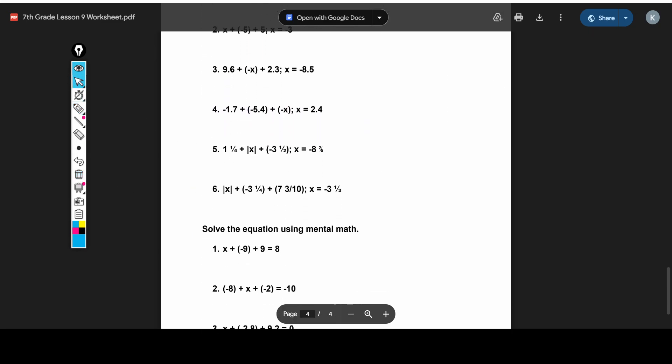All right, now we move on to problem number 4. Negative 1.7 plus negative 5.4 plus negative X, where X is 2.4. So you get negative 1.7 plus negative 5.4 plus negative X, and that will be 2.4. So negative 2.4. So these are all negative numbers. So we kind of add together the negatives. And what we end up with is negative. And then 1.7 plus 5.4 plus 2.4. So that will give us 5.4 plus 2.4 is 7.8, plus 1.7, and it is 9.5.